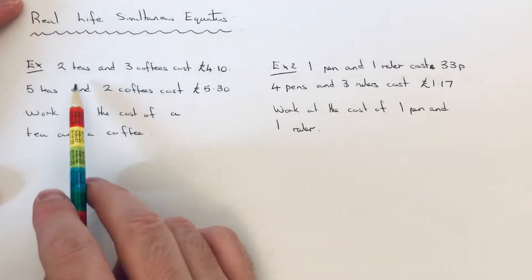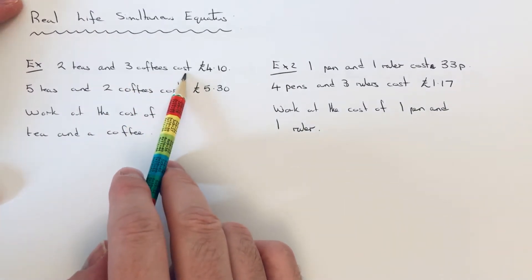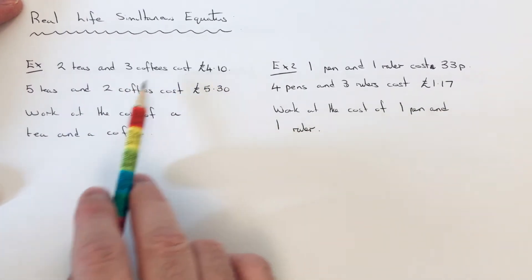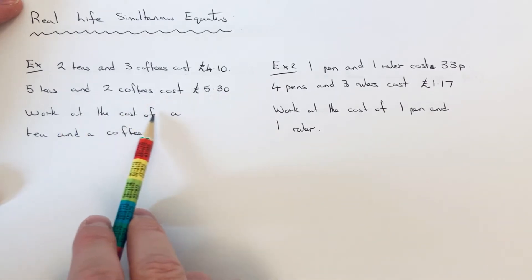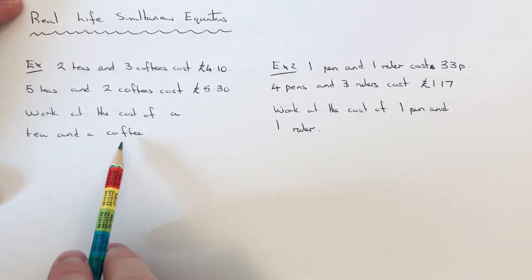So our first example is 2 teas and 3 coffees cost £4.10. 5 teas and 2 coffees cost £5.30. Work out the cost of a tea and a coffee.